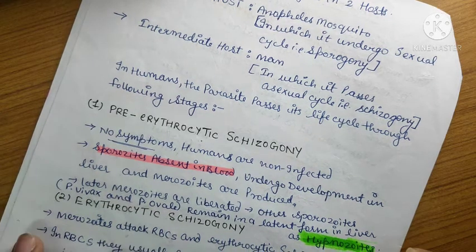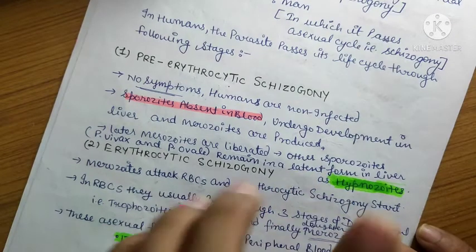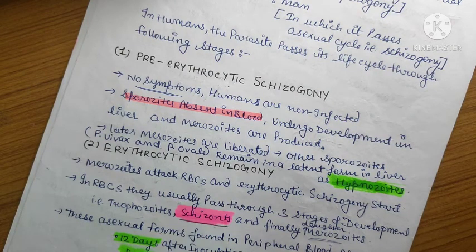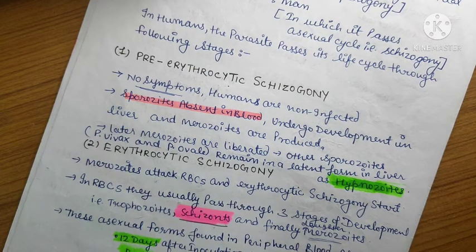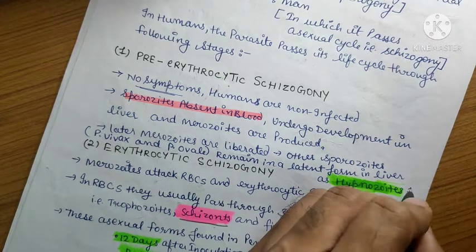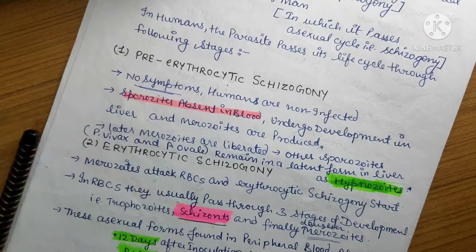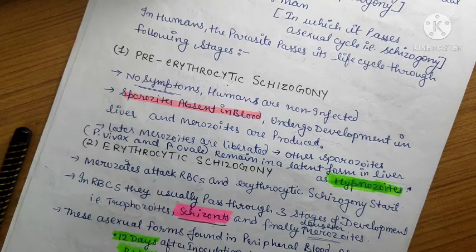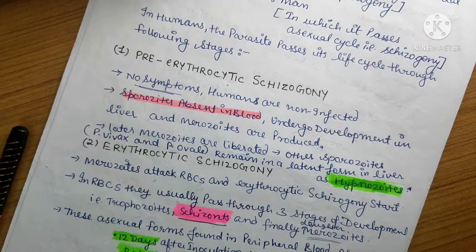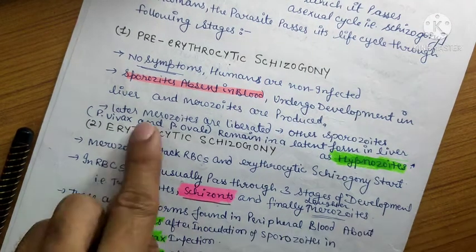Some sporozoites — particularly in Plasmodium vivax — remain in a latent form in the liver as hypnozoites. This is important: hypnozoites represent the dormant form in the liver. This leads into the erythrocytic schizogamy stage.